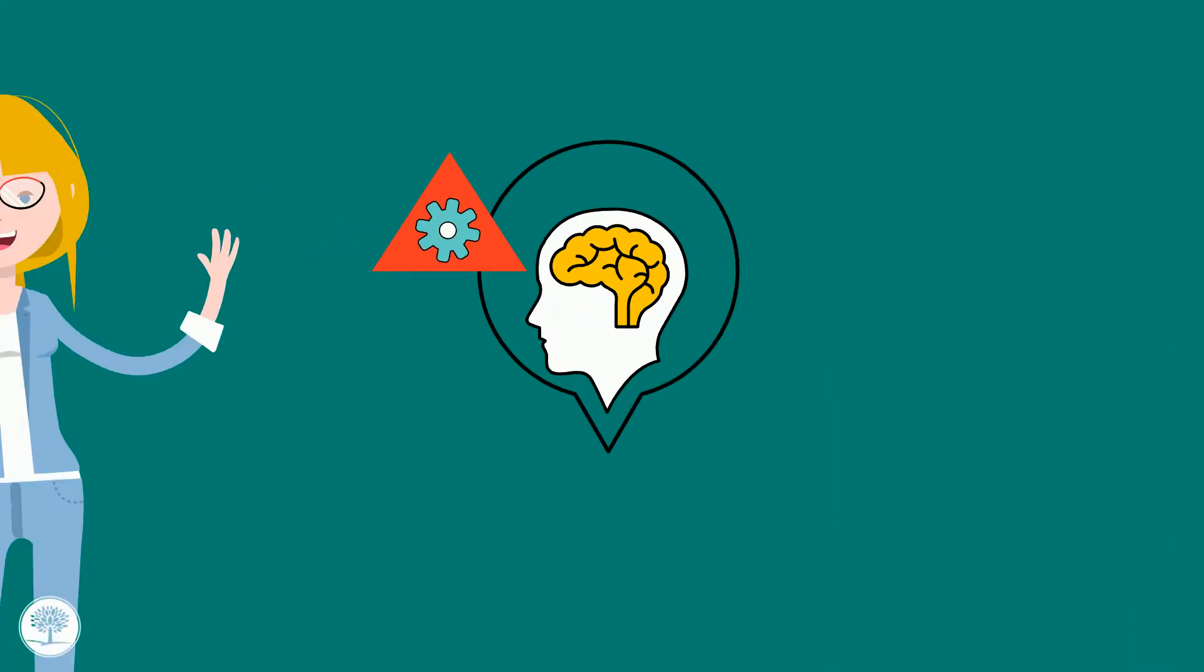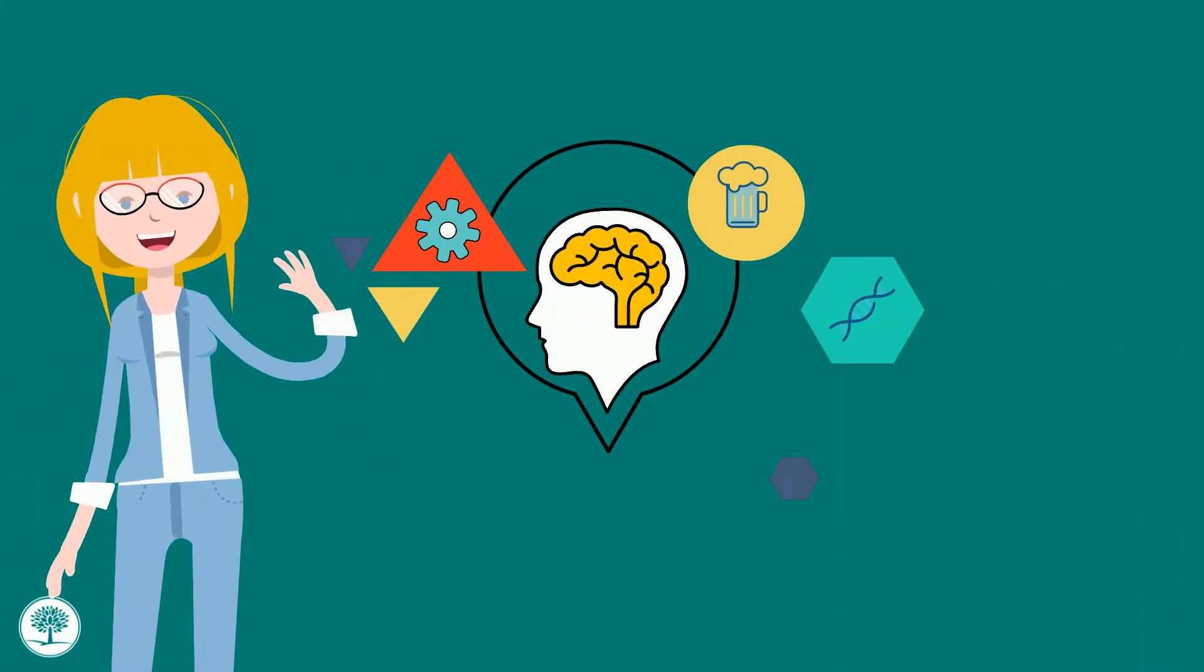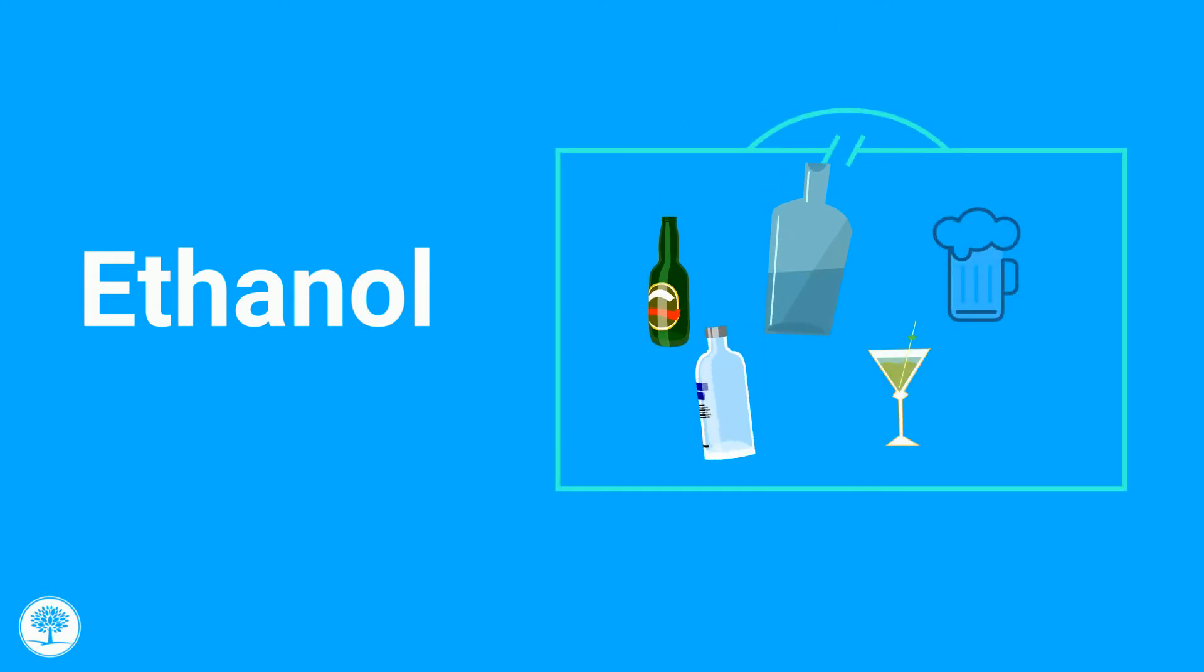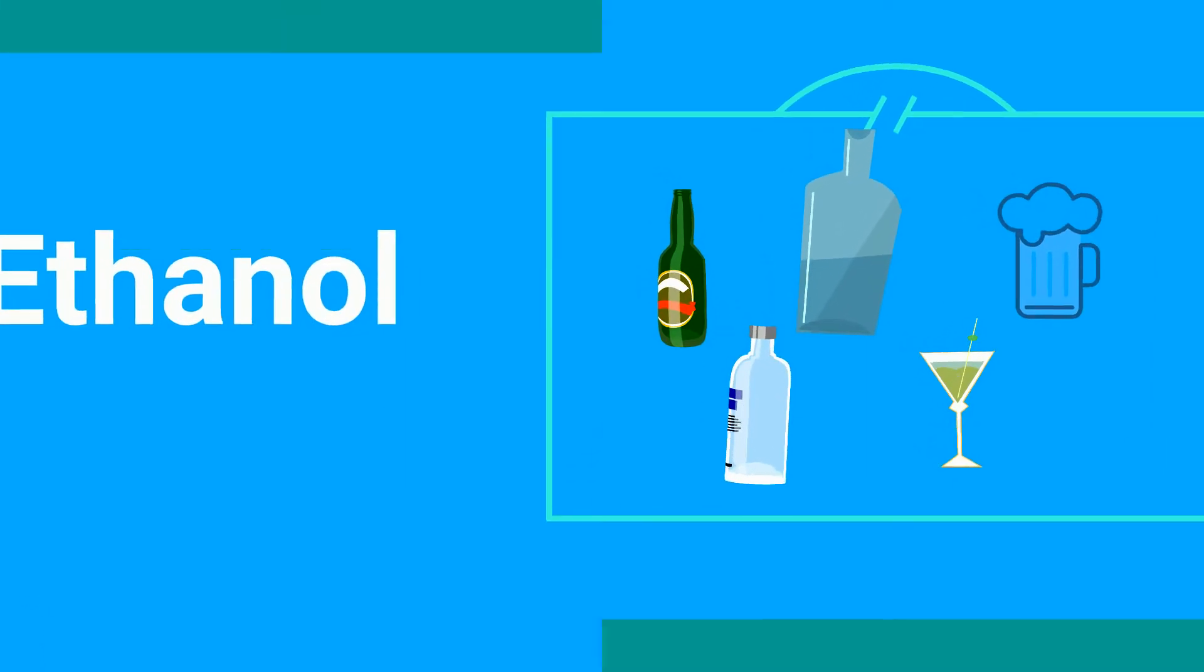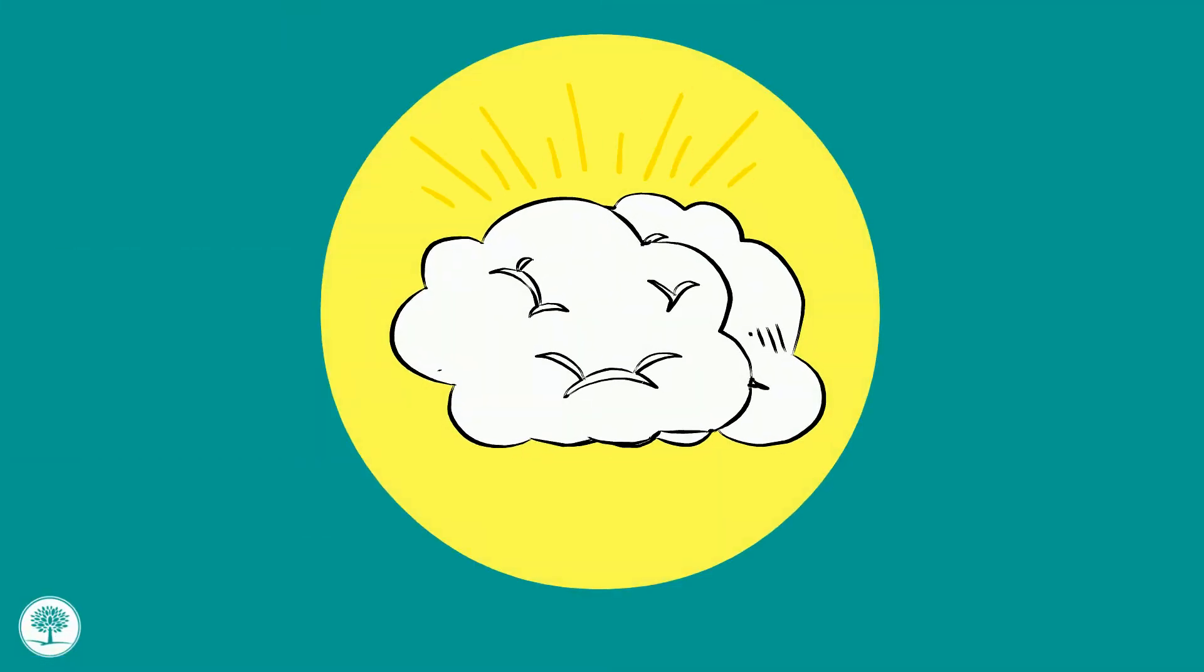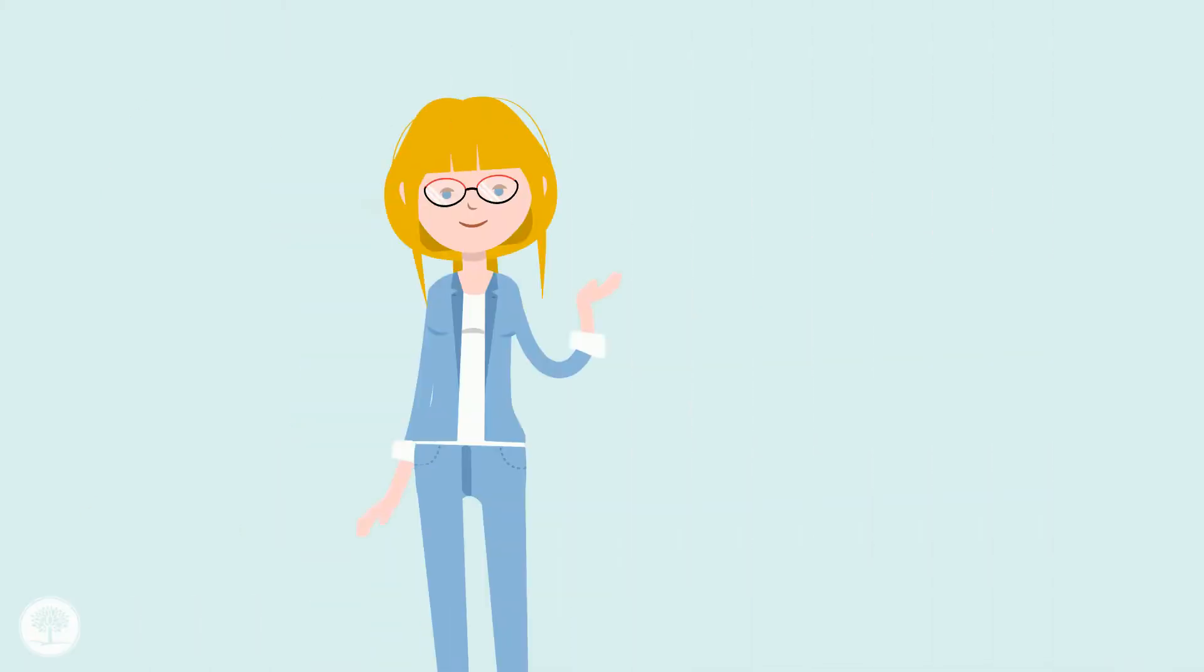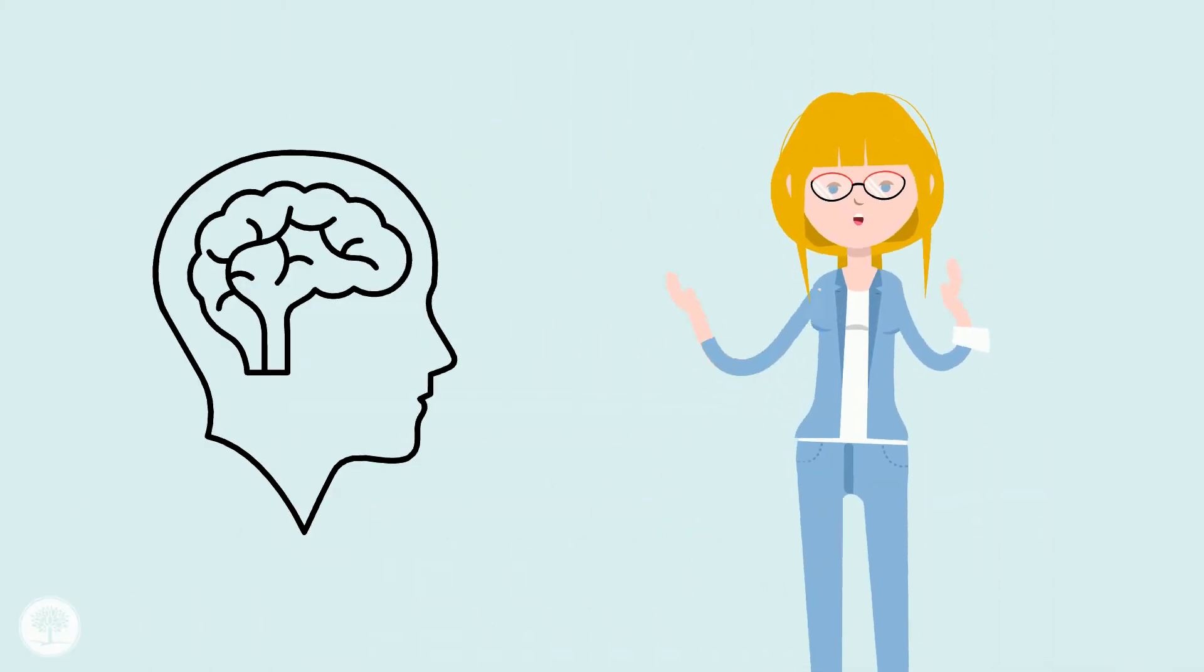This lesson will discuss the neurochemistry of alcohol. Alcoholic beverages contain ethanol. If you think about it, beer, wine, whiskey, gin, vodka, and tequila all contain ethanol, and ethanol is the active ingredient that affects the brain. Ethanol works in many areas of the brain. Today I am going to cover only the main areas of the brain that ethanol acts on.